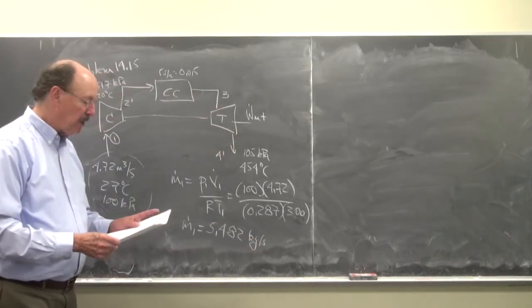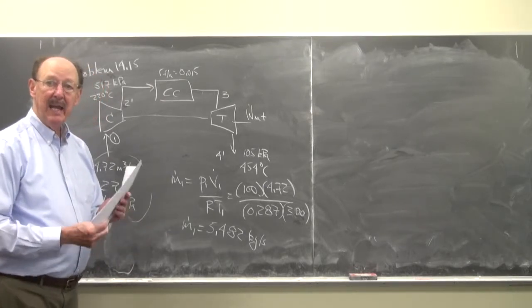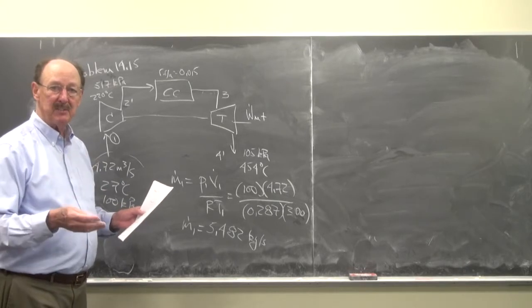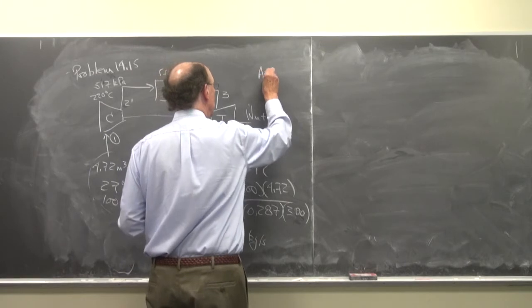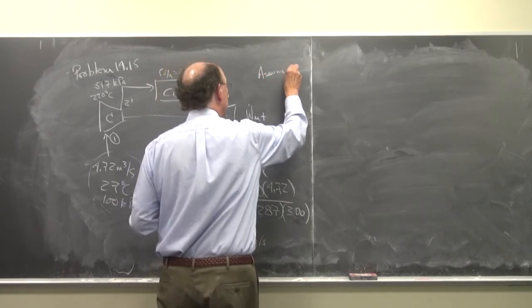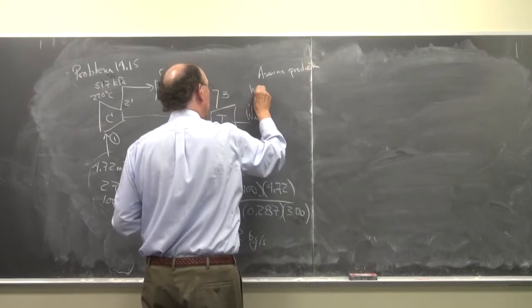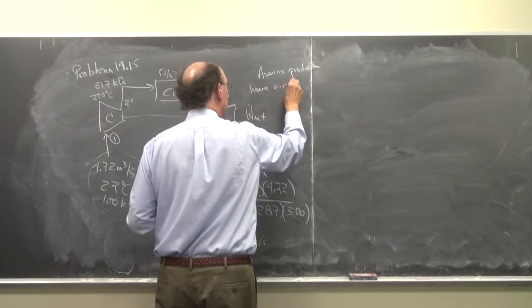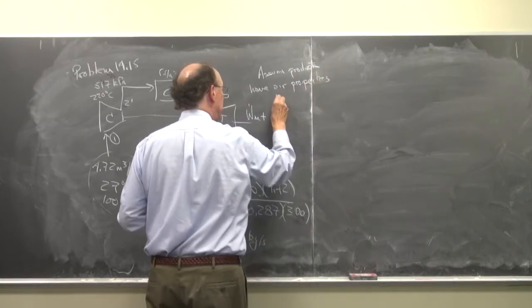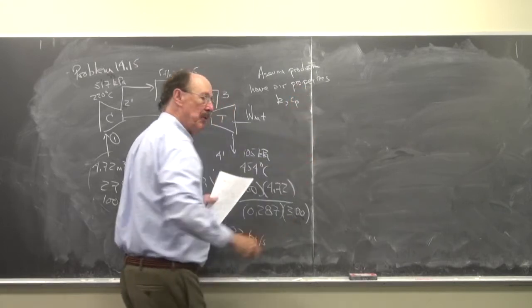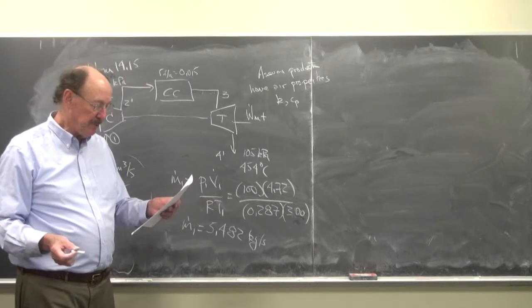So we have the mass flow rate, and in this problem what I used is I let it be air, so I assume the products have the same properties as air. So that's for K and Cp. Unless the problem statement tells you what they are, this is a solution that you have to do.